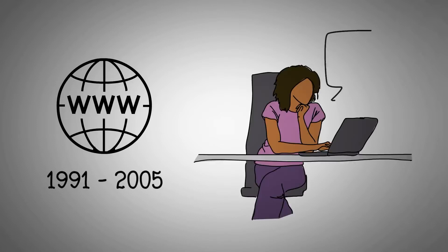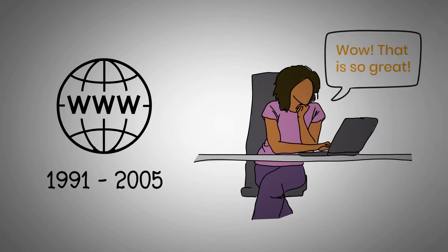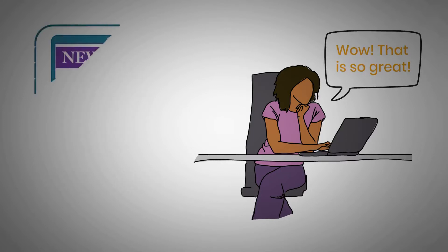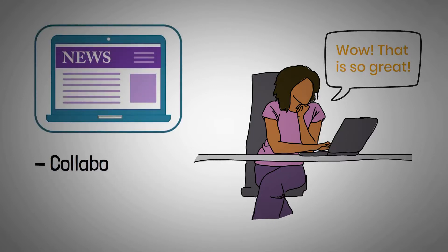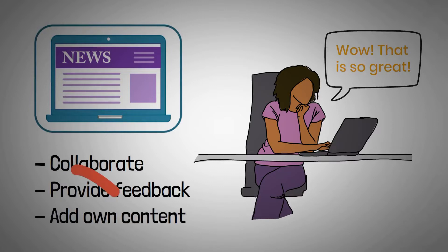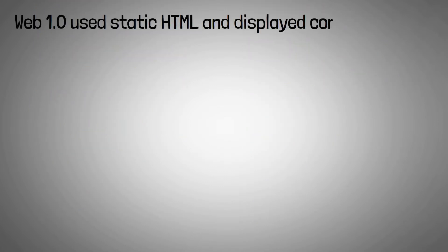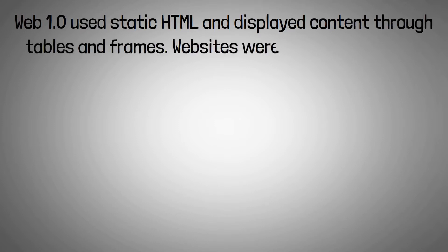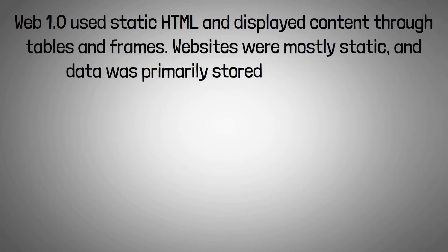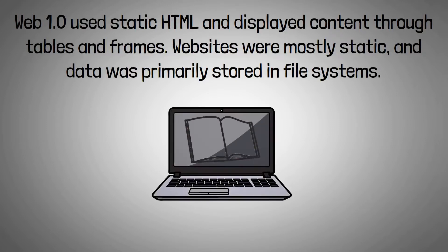Web 1.0 is the internet generation that existed between 1991 and 2005. It was a time when most people were data consumers rather than content creators. Users could view content on websites but could not collaborate, provide feedback, or add their own content. Web 1.0 used static HTML and displayed content through tables and frames, with data primarily stored in file systems. It can be imagined as a massive digital encyclopedia devoid of interactivity.